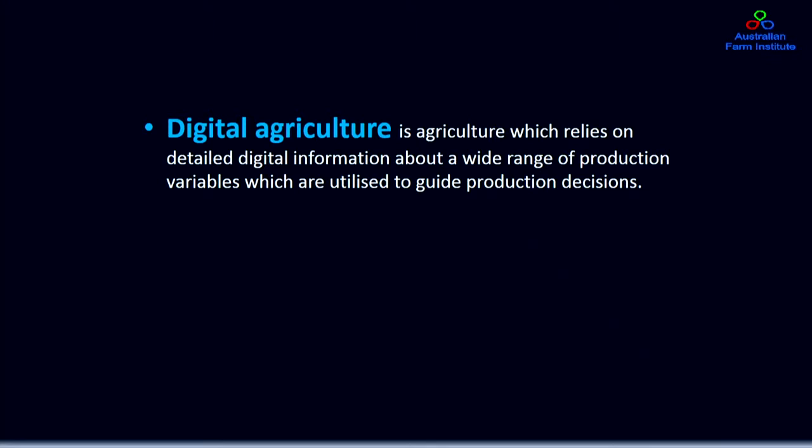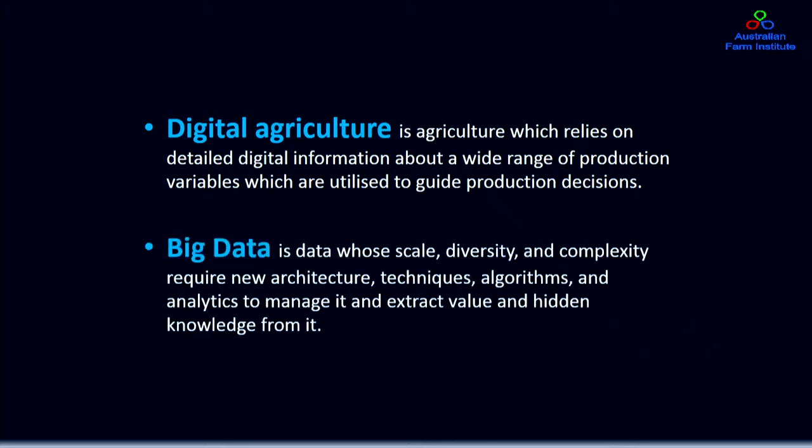Digital agriculture is a term we've used to describe agriculture which relies on detailed digital information about a wide range of production variables, utilised as a guide to production decisions. That's different from big data, because big data is data whose scale, diversity and complexity requires new architecture, techniques, algorithms and analysis to manage it and extract value. The two are obviously related because digital agriculture is part of the collection process for the raw material that becomes part of big data.